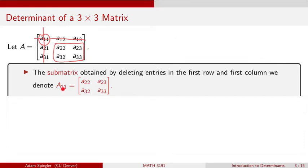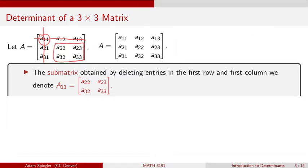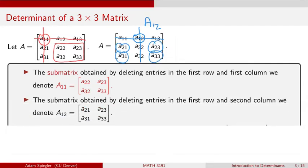These subscripts on capital A denote that we eliminated values in both the first column and the first row, and what's left over is this two by two matrix. Similarly, if I wanted to consider what submatrix A12 would look like, that is the matrix we get when we eliminate the entries in the first row and the second column. We denote that matrix with a capital A and a subscript of one-two, and the four remaining entries create a new two by two submatrix.